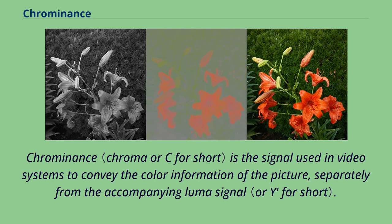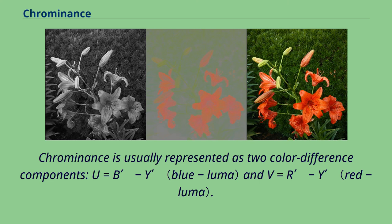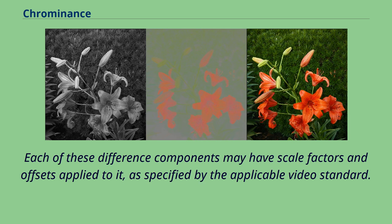Chrominance is the signal used in video systems to convey the color information of the picture, separately from the accompanying luma signal. Chrominance is usually represented as two color difference components: U equals B minus Y, and V equals R minus Y. Each of these difference components may have scale factors and offsets applied to it, as specified by the applicable video standard.